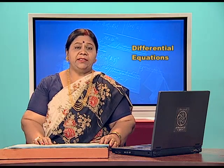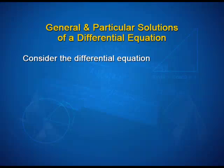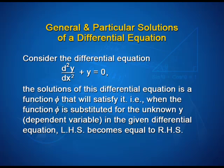The solution free from arbitrary constants, which is obtained from the general solution by giving particular values to the arbitrary constants, is called a particular solution of a differential equation. To summarize, consider the differential equation d²y/dx² + y = 0. The solution is a function phi that satisfies it — that is, when phi is substituted for the unknown y in the given differential equation, LHS becomes equal to RHS.